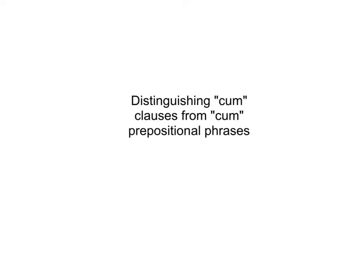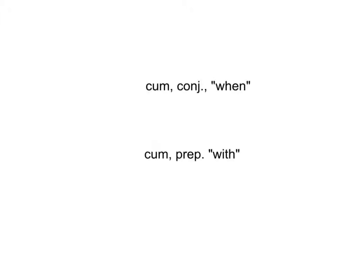Hey guys, this is Mr. Breen, and in this video I'm going to be showing you how to distinguish cum clauses — meaning when clauses, with cum as the clause marker — and cum prepositional phrases. For a long time you've had this word cum as a preposition meaning 'with,' but now we're seeing this word cum as a conjunction, meaning 'when.'